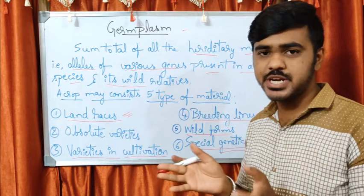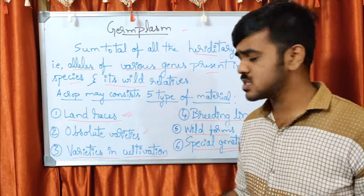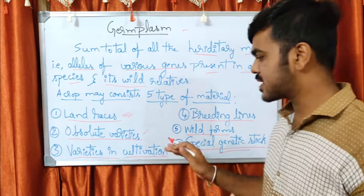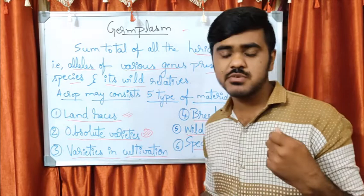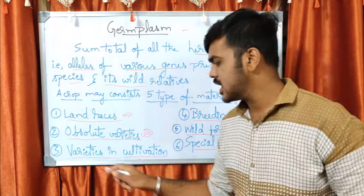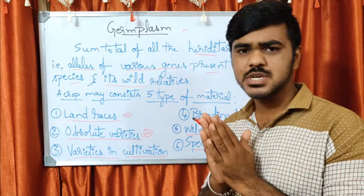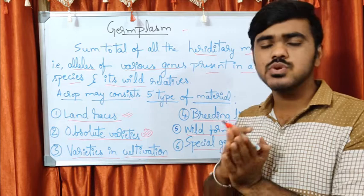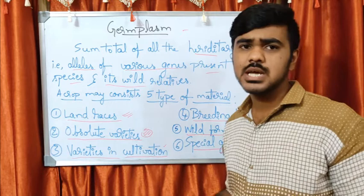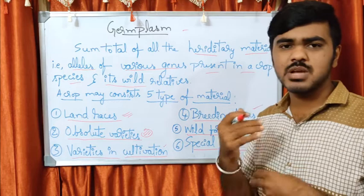The second type is obsolete varieties — these were once developed through breeding programs and released as varieties, but are no longer cultivated. However, they have special characters that can be used in breeding programs. The third type is varieties in cultivation — these haven't had much breeding effort applied, but are being cultivated and giving good results for farmers, making them useful in breeding programs.